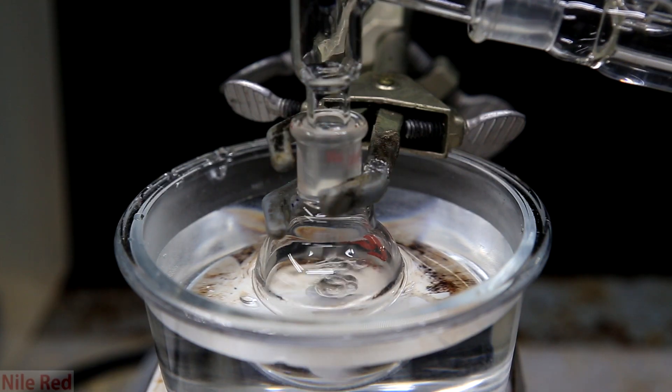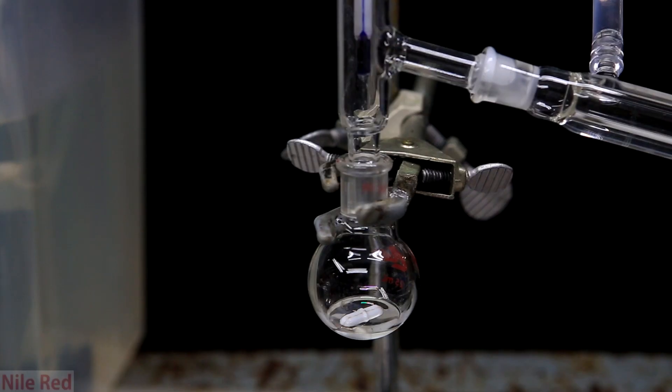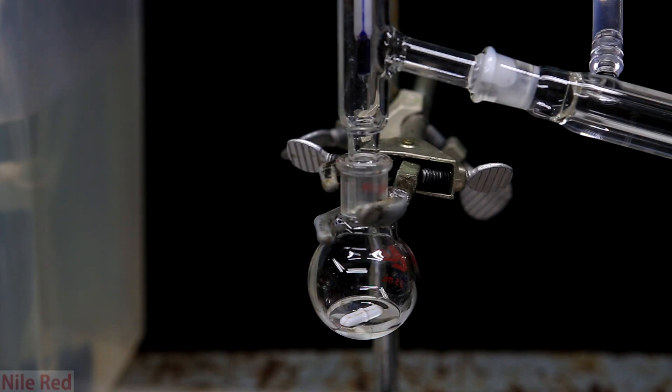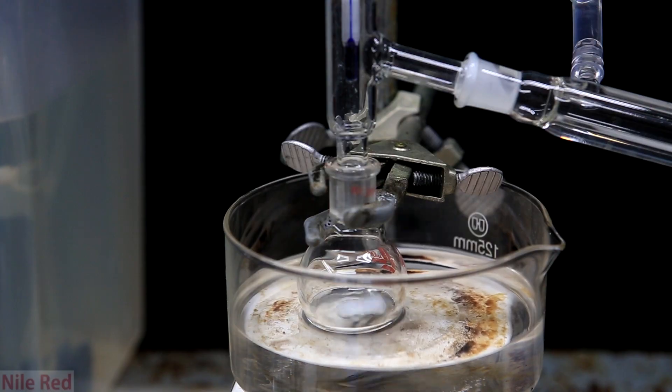So the ether pretty quickly comes to a boil because it only boils at around 35°C. After the ether is gone we're left with a little bit of product but it's not enough to actually distill it. If we tried to most of it probably wouldn't make it through the distillation apparatus.